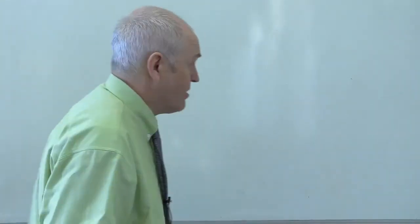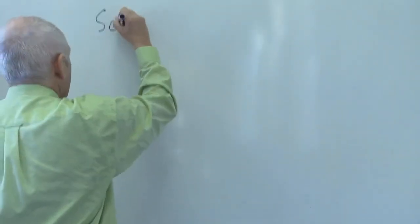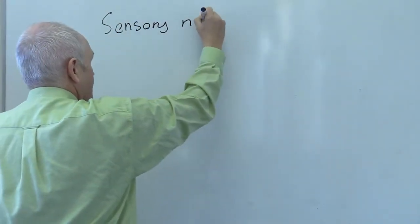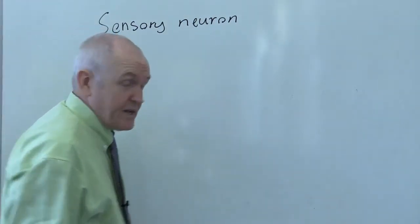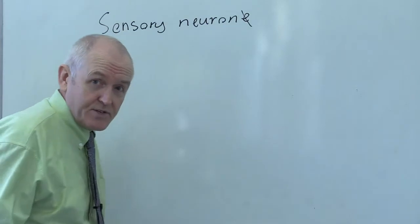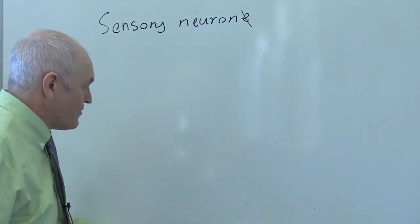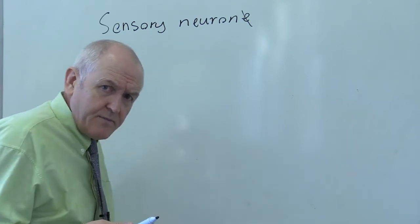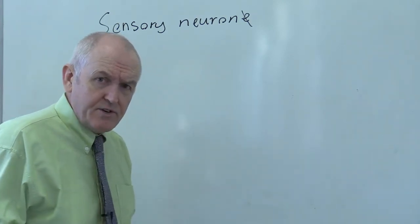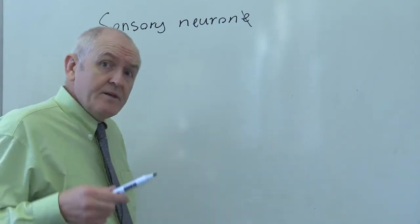We want to think about sensory neurons and how we are aware of the environment — we can see, smell, taste, and feel. Let's think about the neurological basis for this as we consider the sensory neurone. We've already looked at the motor neuron in the first video in this series, and the components of the sensory neuron in many ways are very similar.